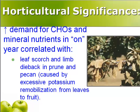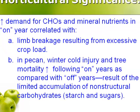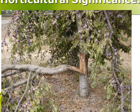Increased demand for carbohydrates and mineral nutrients in on years is correlated with leaf scorch and limb dieback in prune and pecan, caused by excessive potassium remobilization from leaves to fruit. Increased demand is also correlated with limb breakage from excessive crop load. In pecan and other crops, winter cold injury and tree mortality increase following on years, likely due to limited accumulation of non-structural carbohydrates such as starch and sugars, which act as antifreeze in fruit trees. Excessive crop loads break limbs, as seen in this picture of a French prune tree.